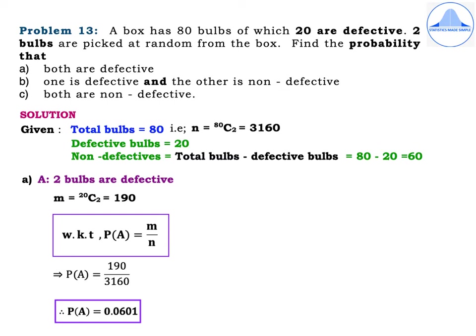Start with the first subdivision. Define event A as 2 bulbs are defective. M = 20C2 = 190. P(A) = M by N = 190 divided by 3160. Therefore, P(A) = 0.0601.